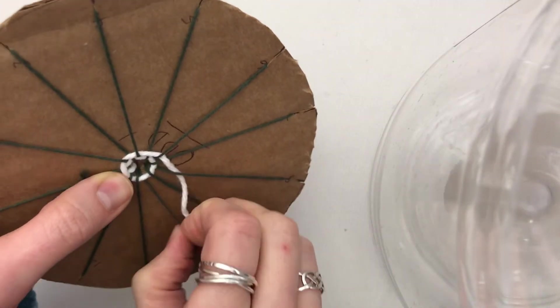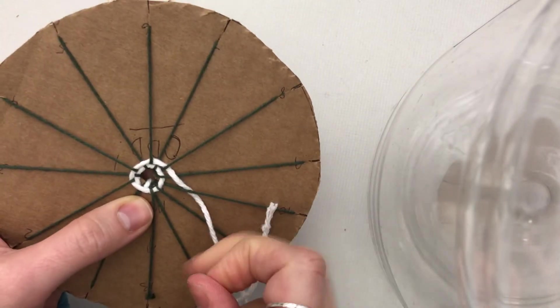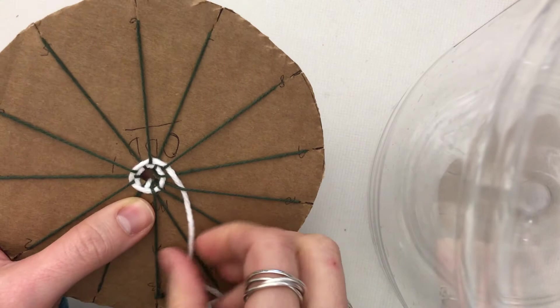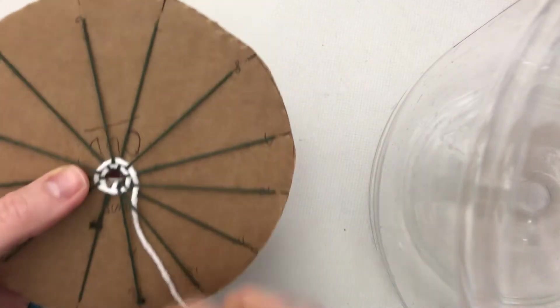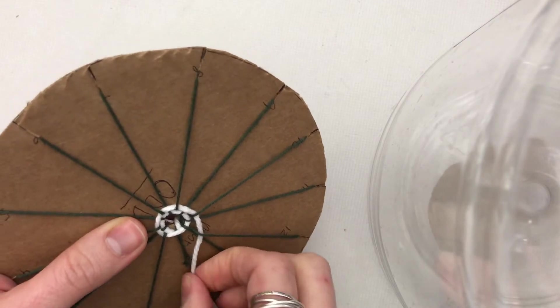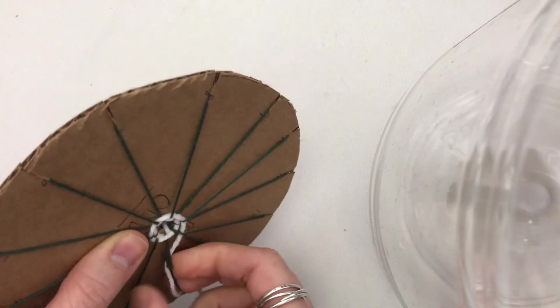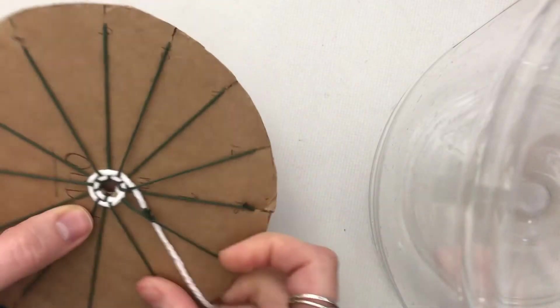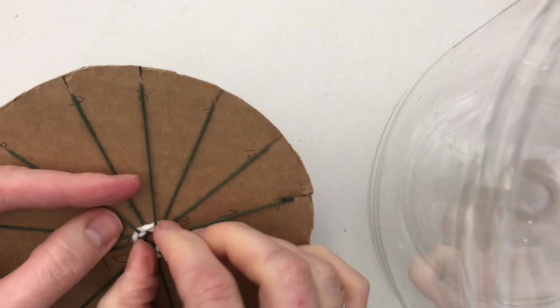Over nine, under ten. Over eleven, under twelve. Over thirteen, and back to being under one. Continue on with this process until you either finish your string or your design is complete.